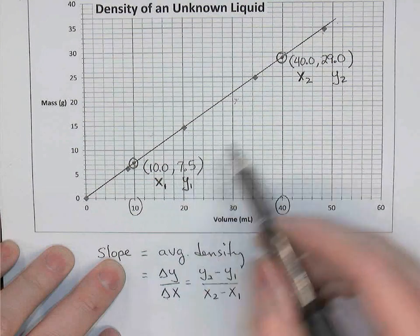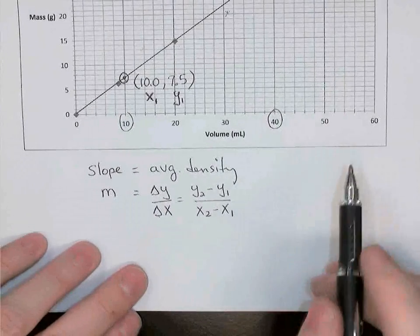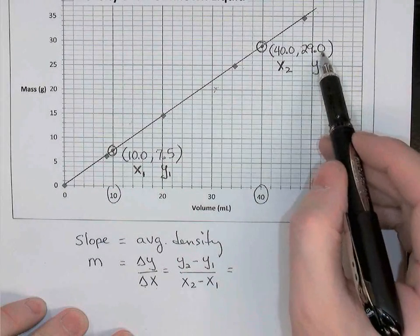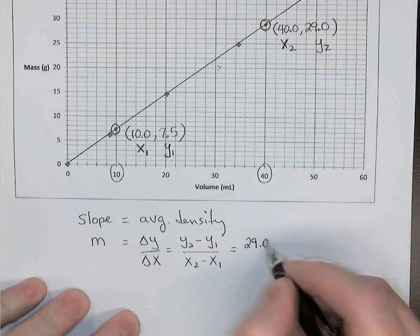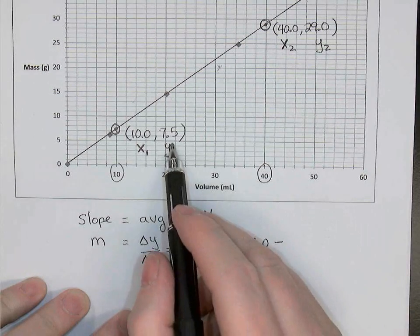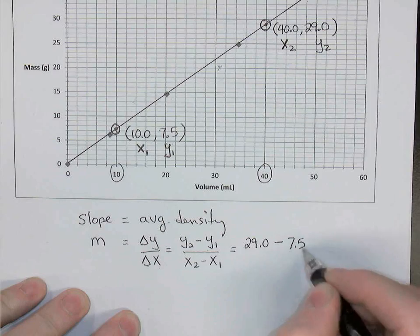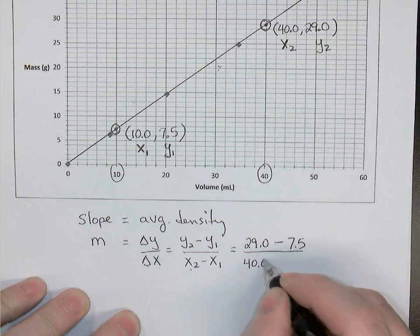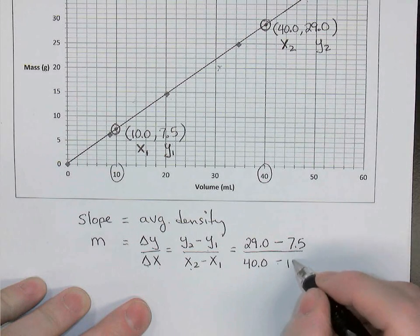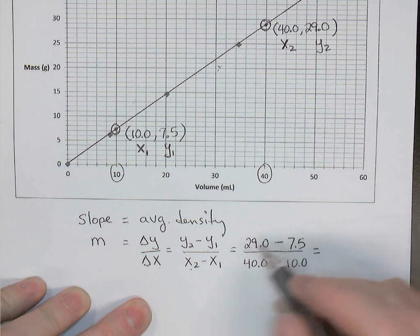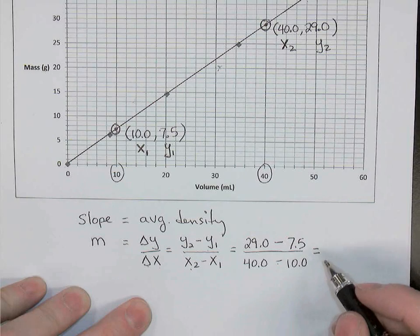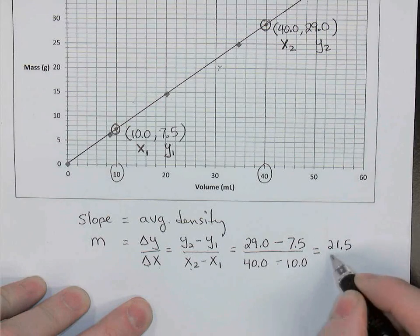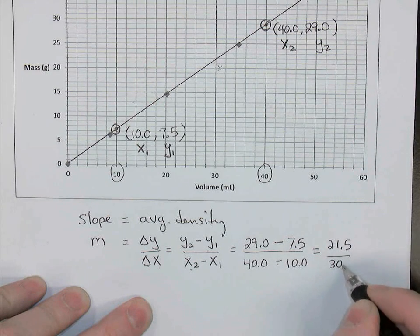Now I'm simply going to take my y2 and y1 values and bring them down here and put them in my formula. So y2, the point at the top of the here, was 29.0. So 29.0 minus y1, which was 7.5 over x2, which was 40.0, the x coordinate of the second point, minus 10.0. Equals, we grab a calculator. If you have to, 29 minus 7 would be 22. So 29 minus 7.5 is 21.5 over 40 minus 10 is 30.0.